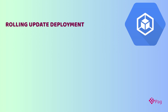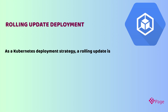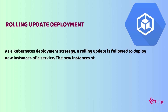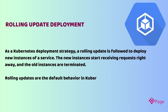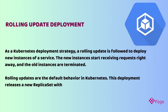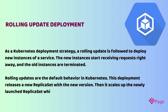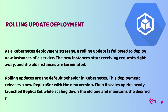Rolling update deployment: As a Kubernetes deployment strategy, a rolling update is followed to deploy new instances of a service. The new instances start receiving requests right away and the old instances are terminated. Rolling updates are the default behavior in Kubernetes. This deployment releases a new replica set with the new version, then scales up the newly launched replica set while scaling down the old one, and maintains the desired replica count.